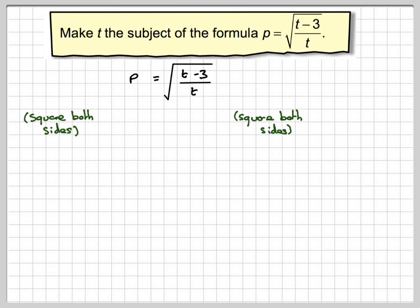So if you square this side, you're going to get p squared. And squaring a square root sign just gives you what's inside the square root, which is t minus 3 over t.